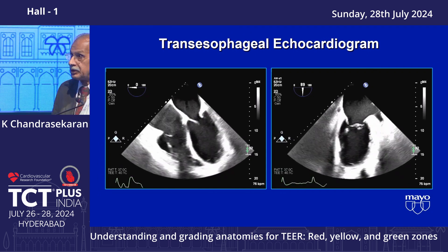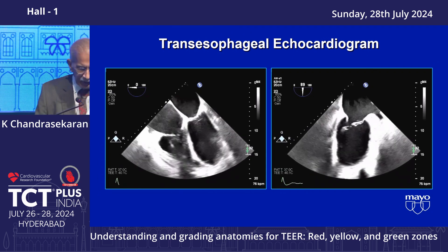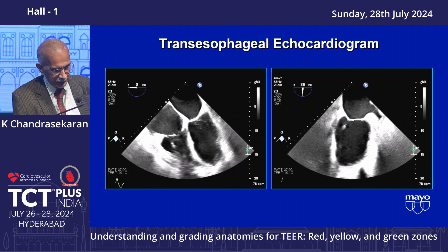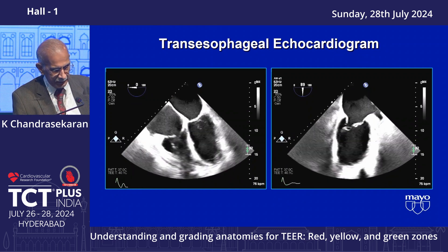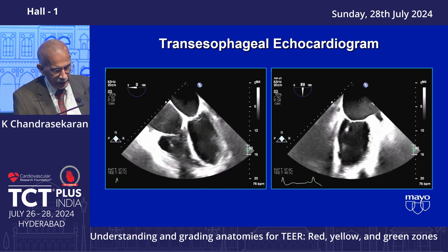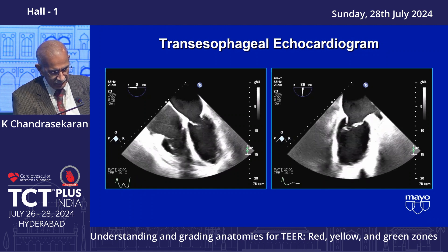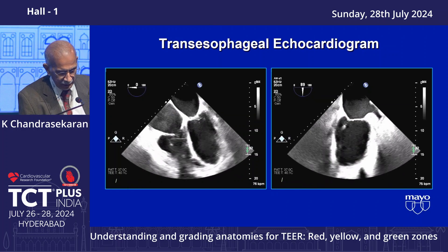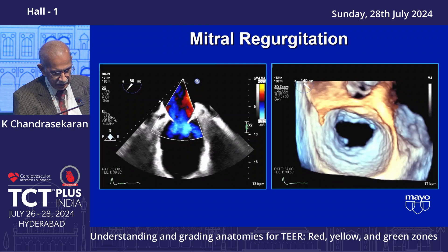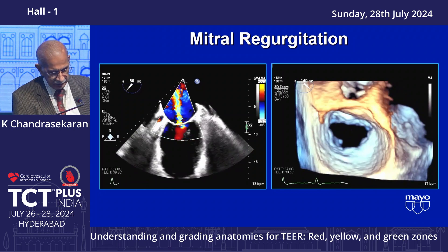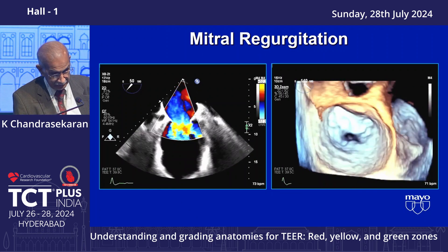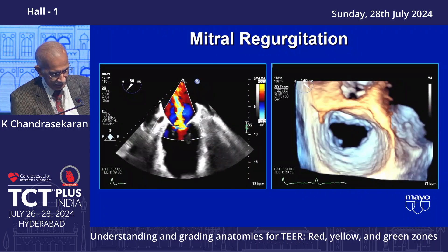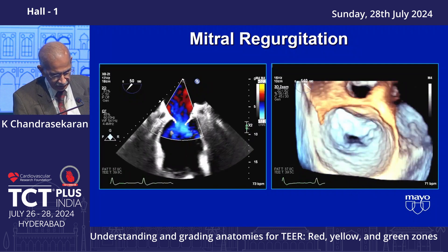For functional MR, the same A2-P2 approach applies. The most important thing to assess is the length of P2 and coaptation height — can you pull it back? Check if the annulus is also dilated, because if it is you cannot pull the leaflets together. TEE clearly shows the posterior leaflet tissue in this case: the tissue is large enough and the coaptation length is sufficient to allow placing a clip. This is straightforward and easy to do.